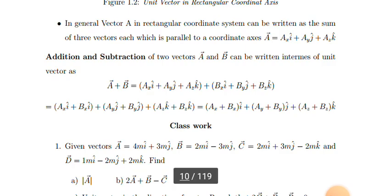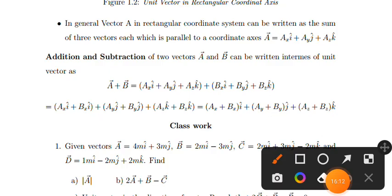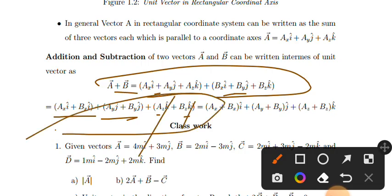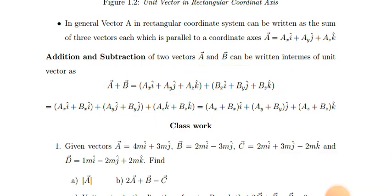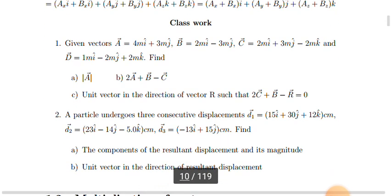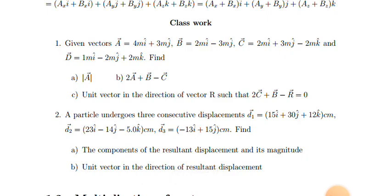Addition and subtraction of two vectors in unit vector form: if A equals A_x I plus A_y J plus A_z K and B equals B_x I plus B_y J plus B_z K, you can add or subtract the corresponding components.